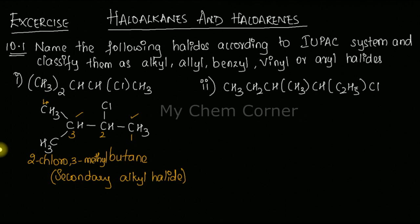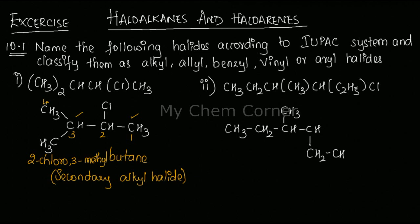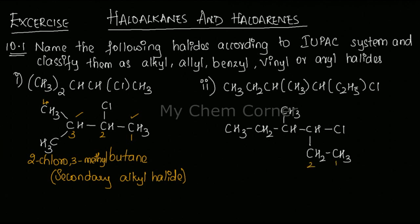For the second compound, we draw the structure: CH₃–CH₂–CH, with a CH₃ branch in brackets, then continuing the chain with a C₂H₅ (ethyl, i.e., CH₂CH₃) branch in brackets, and then a Cl at the end. For numbering, we start from the side where the functional group gets the lowest number, so we start from the right-hand side, giving a chain of one through six — a hexane chain.